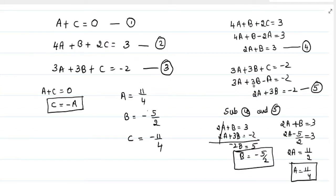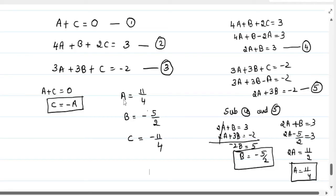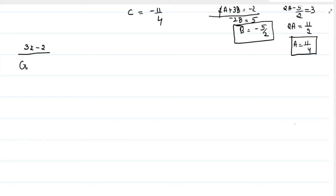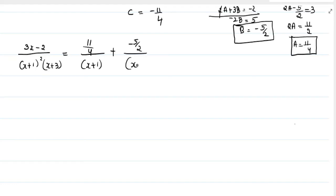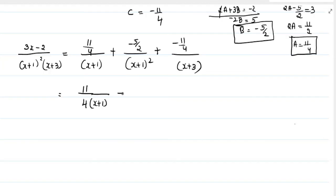On solving these three equations, we get A equals 11 by 4, B equals minus 5 by 2, and C equals minus 11 by 4. Substituting A, B, and C, the integrand becomes: (3x minus 2) divided by [(x plus 1) whole square into (x plus 3)] equals (11/4) divided by (x plus 1), minus (5/2) divided by (x plus 1) whole square, minus (11/4) divided by (x plus 3).